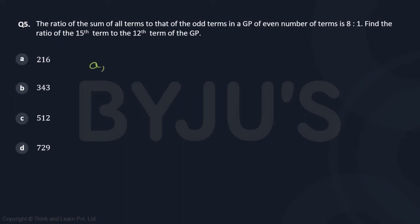Let us say that GP is a, ar, ar², and so on up to ar^(n-1). The sum of these is the total series.